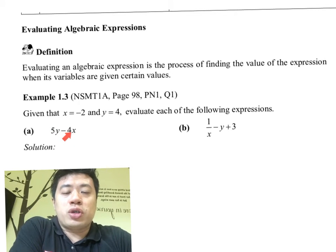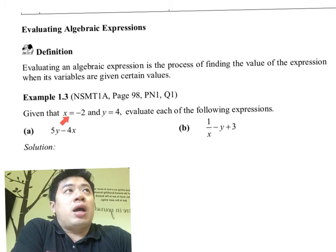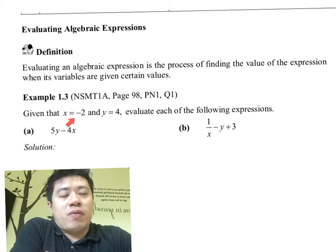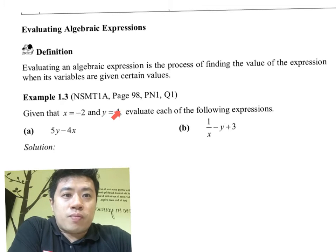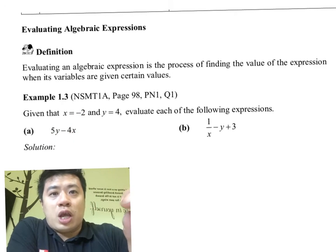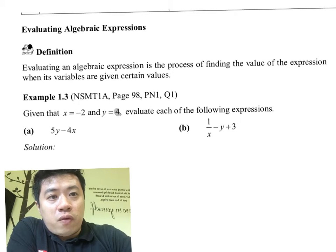In Example 1.3, given that x equals negative 2 and y equals 4, we are putting the value of 4 into this expression and the value of negative 2 into this expression. The 4 will be representing y, taking over the y here, and negative 2 will be taking over the value of x.